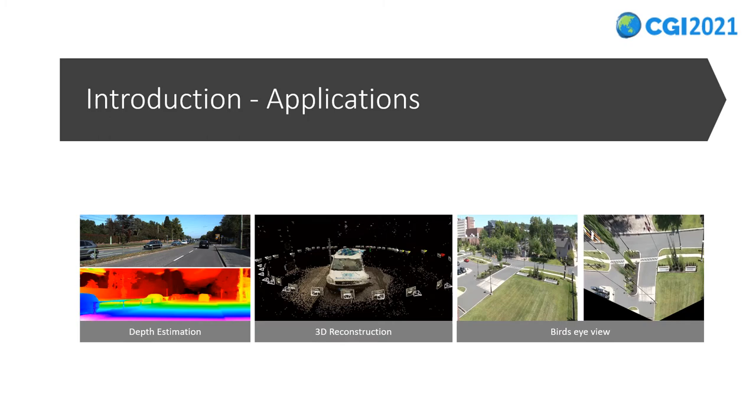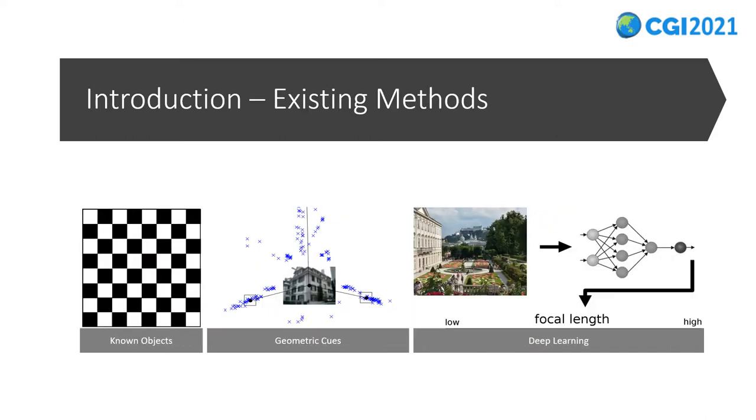Camera calibration plays an important role in many computer vision tasks, including depth estimation, 3D reconstruction, obtaining bird's eye views, and so on. Hence, several kinds of methods estimating camera focal lengths from a single image are explored to accommodate different usage scenes.